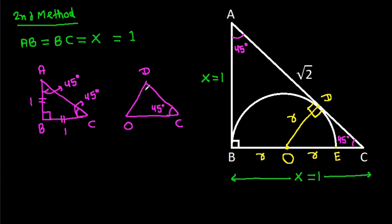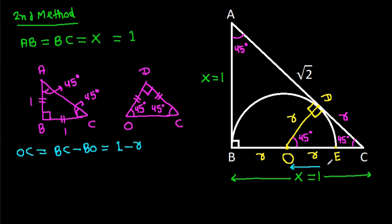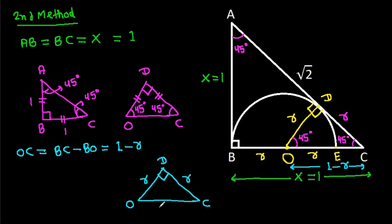In triangle OCD, angle OCD is 45 degrees and angle ODC is 90 degrees, so angle COD is also 45 degrees. That means OD equals CD, and OD is r, so CD equals r. Also OC equals BC minus BO, which is 1 minus r. In triangle OCD with the right angle, r squared plus r squared equals (1 minus r) squared.